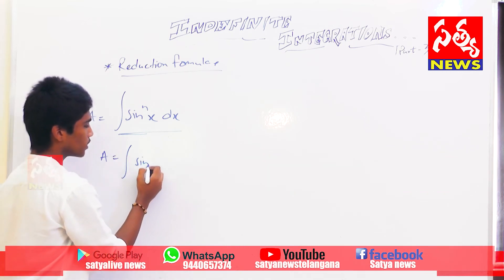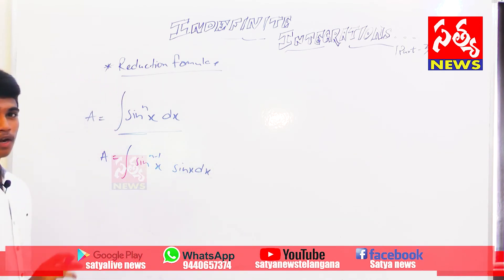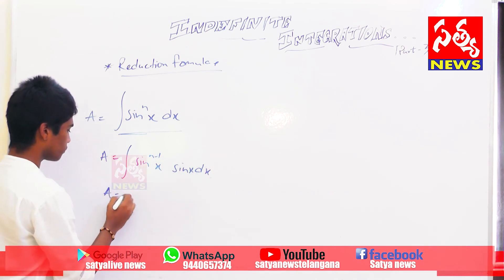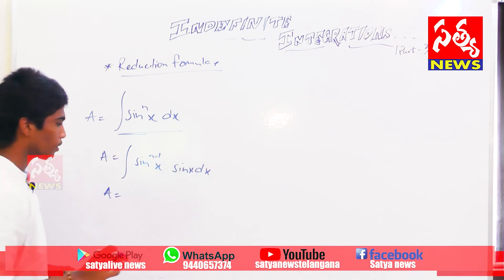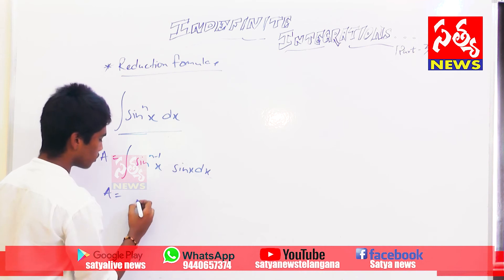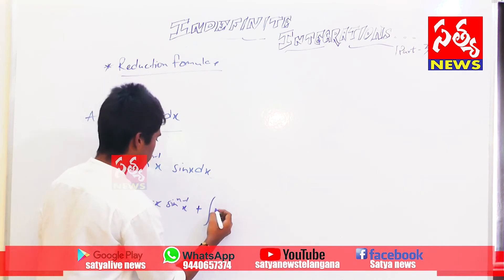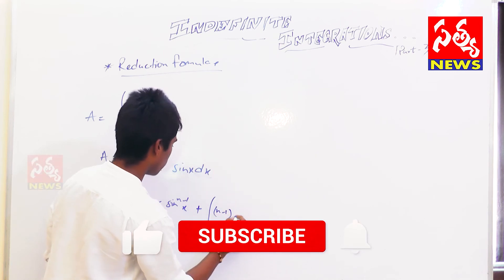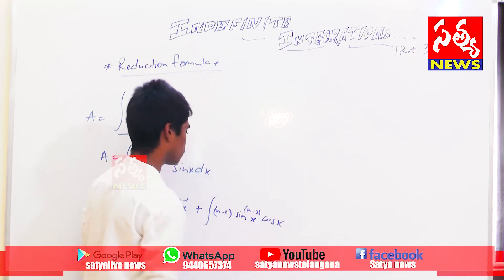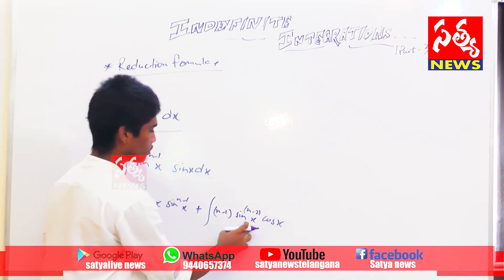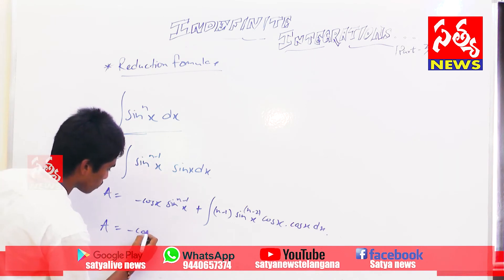Now, do integration by parts. If you don't know by parts, please watch part 2 of indefinite integrations. Integrating sin x gives minus cos x, so we get minus cos x · sin^(n-1)(x) plus integration of (n-1) sin^(n-2)(x) · cos x, multiplied by the differentiation of sin^(n-1)(x), which is cos x dx.